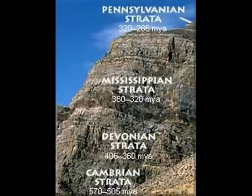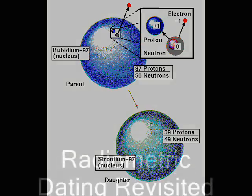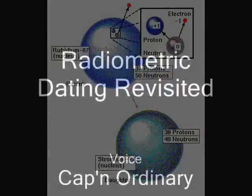Which element is useful for dating is determined by which age group you estimate the object to be in. To avoid using the wrong ones, what we actually do is use several different elements in the same sample and count the number of atoms of the original and the one it decays into, taking into account that some particles of the decay product may have already been present. If we can come up with similar dates on all of the elements useful within a certain time frame, we can be pretty sure we've found the actual age of the object.